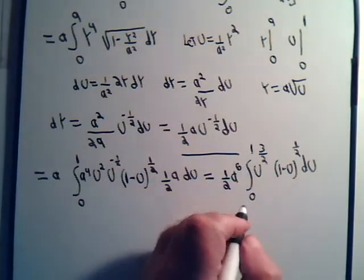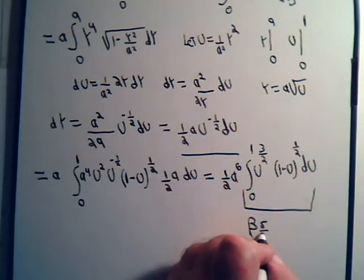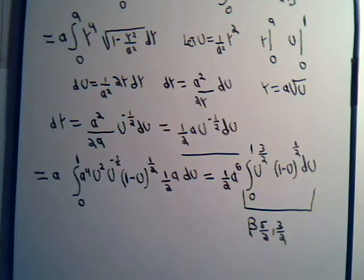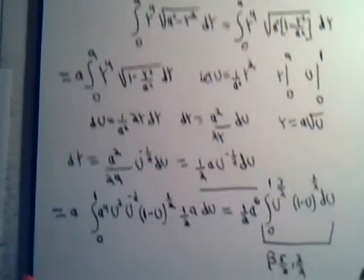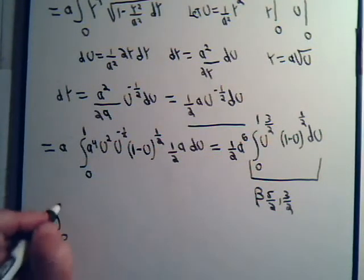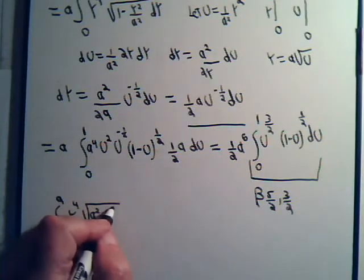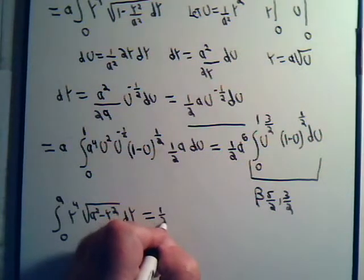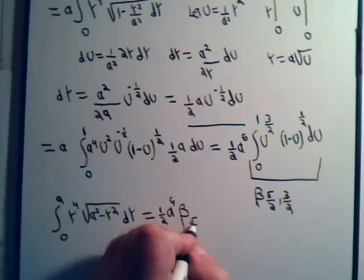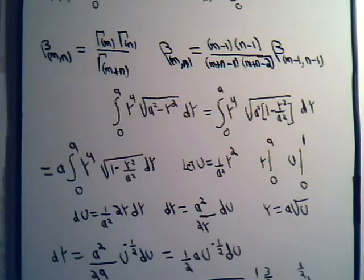And this, finally, is a beta function that satisfies all the requirements. That would be B(5/2, 3/2). So we have our original integral equal to one-half a to the sixth times that beta function. And from here we're actually finished, or just about finished. It's just a matter of doing some arithmetic using the gamma function relation.